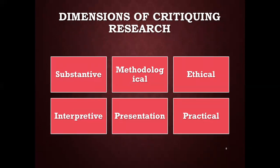Methodological dimensions ask: does it clearly identify variables in measurable terms? What is the nature of the population to be studied? What is the type of particular study? Are there methodological issues, and is it worthy in terms of significance? Ethical dimensions ask: does it require the use of human subjects, and does the research problem imply potential risks for the subjects?